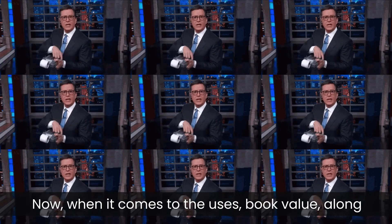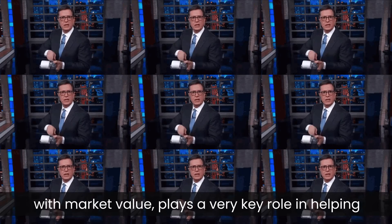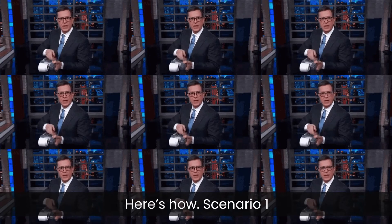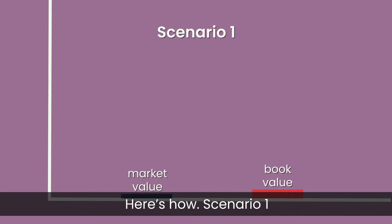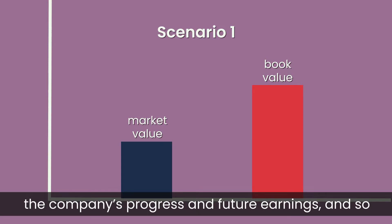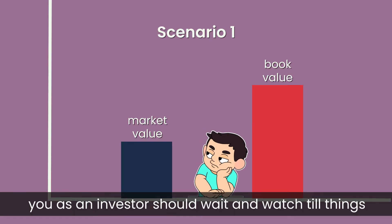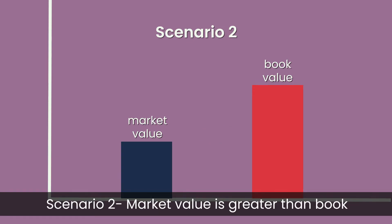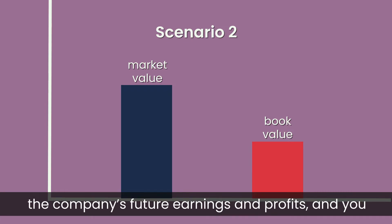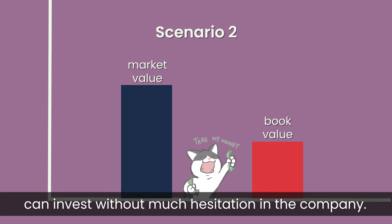When it comes to uses, book value along with market value plays a very key role in helping you find out if a stock is overvalued or undervalued. Scenario 1: market value is lesser than book value. This means the market has very little confidence in the company's progress and future earnings, so you as an investor should wait and watch till things change for the better. Scenario 2: market value is greater than book value. In this case, the market has real confidence in the company's future earnings and profits, and you can invest without much hesitation.